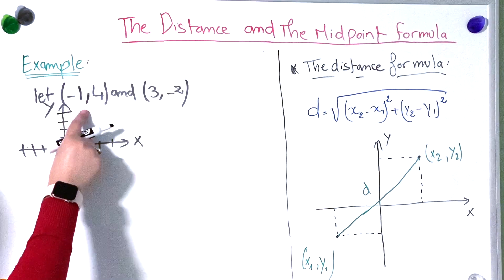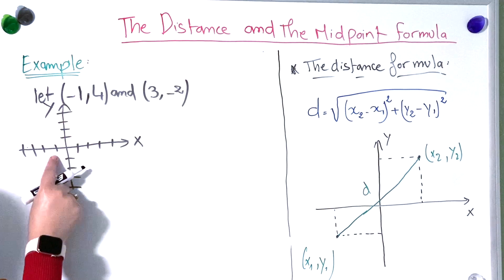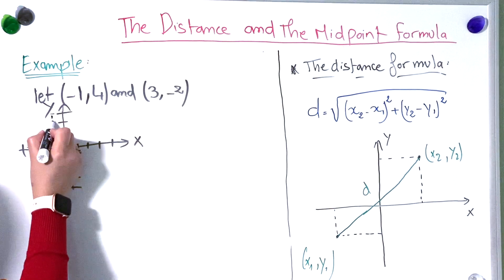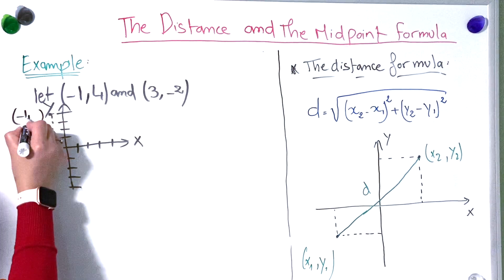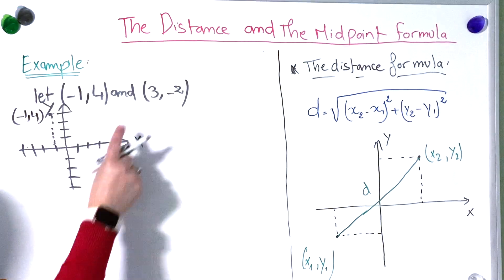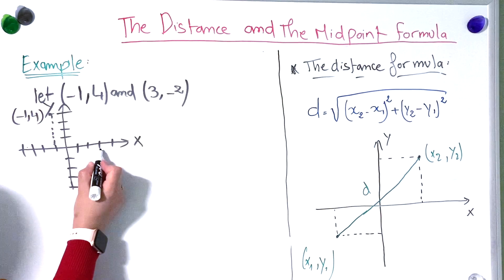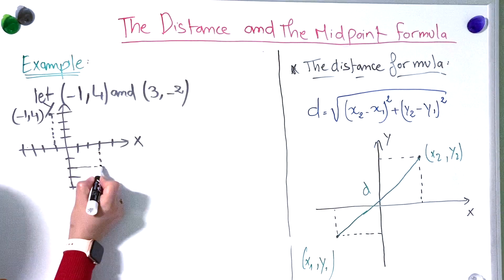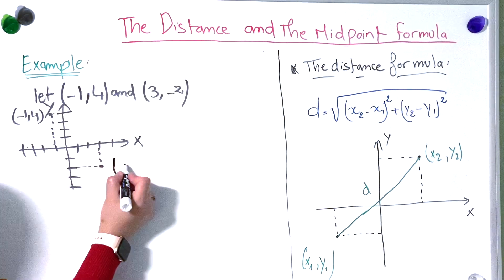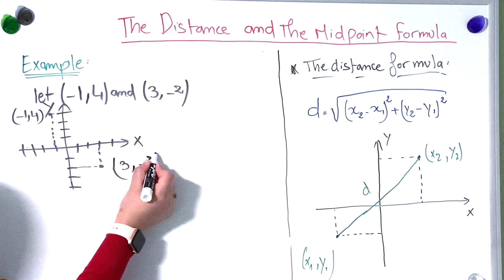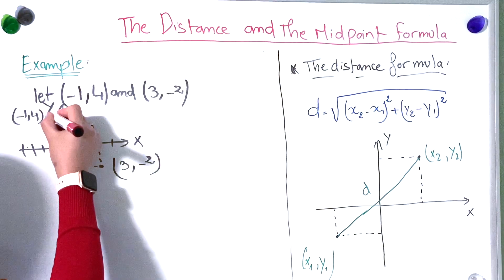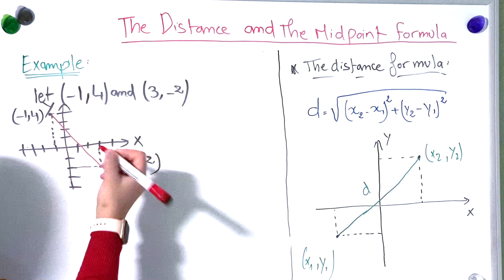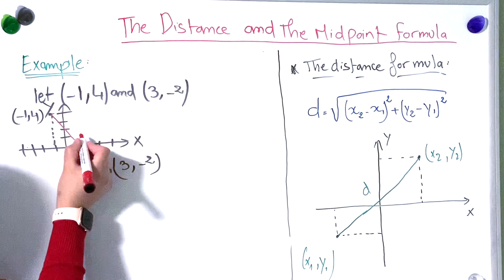Let's graph the first point. We have x equal to −1 and y equal to 4, so here's the first point (−1, 4). The second point has x equal to 3 and y equal to −2, so here's the second point (3, −2). We're going to draw a line between these two points, and this line represents the distance.